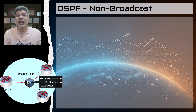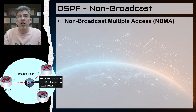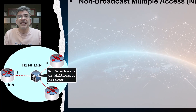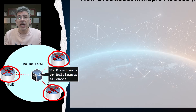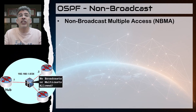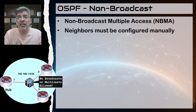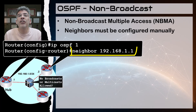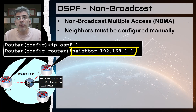Let's look at the non-broadcast network type — its full correct name is Non-Broadcast Multiple Access, or NBMA. This network type is for technologies that don't support broadcast and thus don't support multicast. These technologies are still multiple access, meaning you can have more than two devices on the network, as shown here. But because multicast isn't supported, we need a different way to establish neighbors. When an interface is configured as non-broadcast, OSPF neighbors will not be established automatically — they must be manually configured.